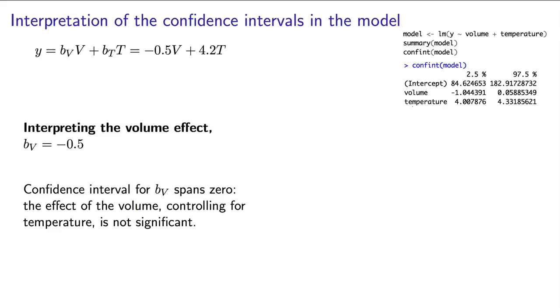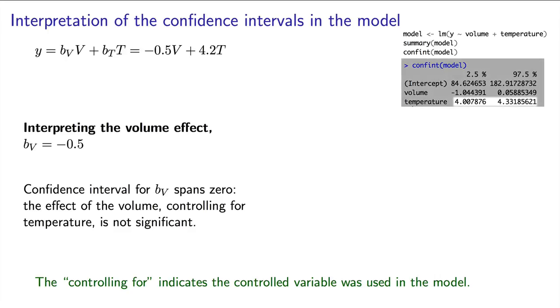Here again, it is important to add the controlling for part. It indicates that controlled variables were considered in the model. In other words, that we controlled for the temperature, and when controlling for it, we found that the volume effect was not significant.